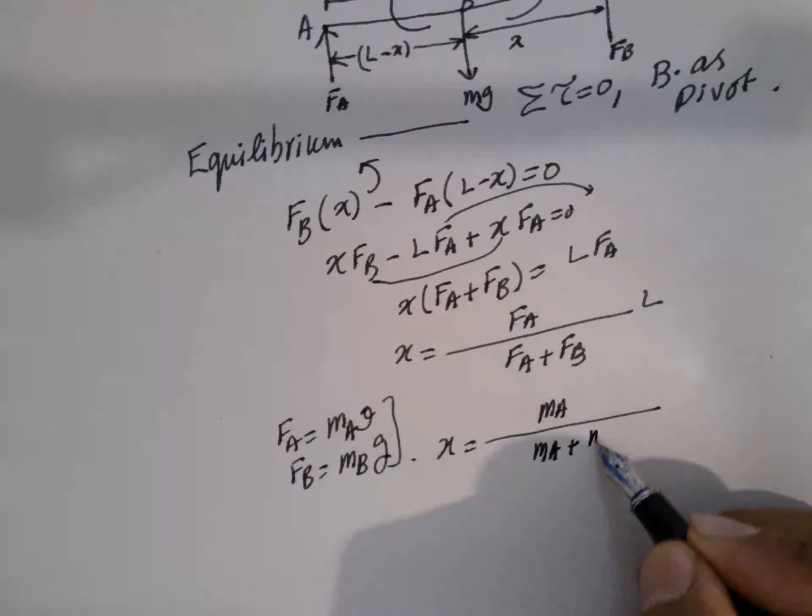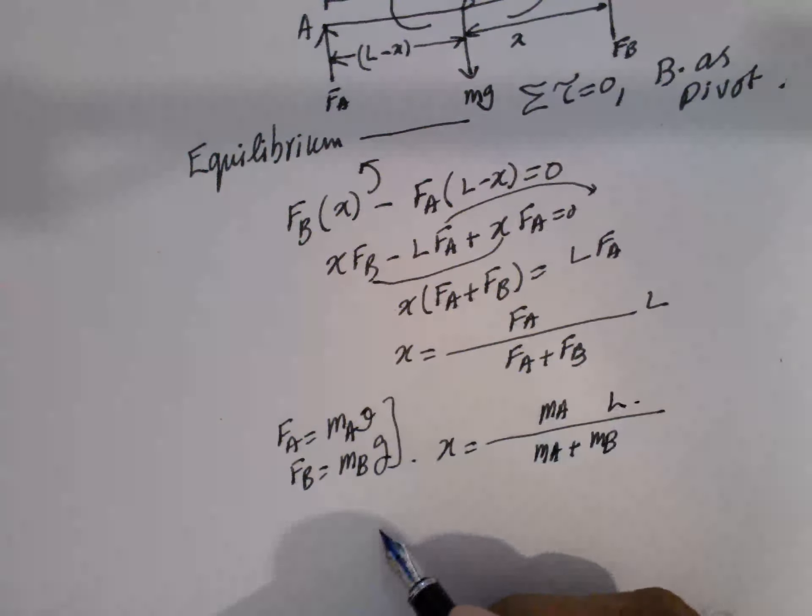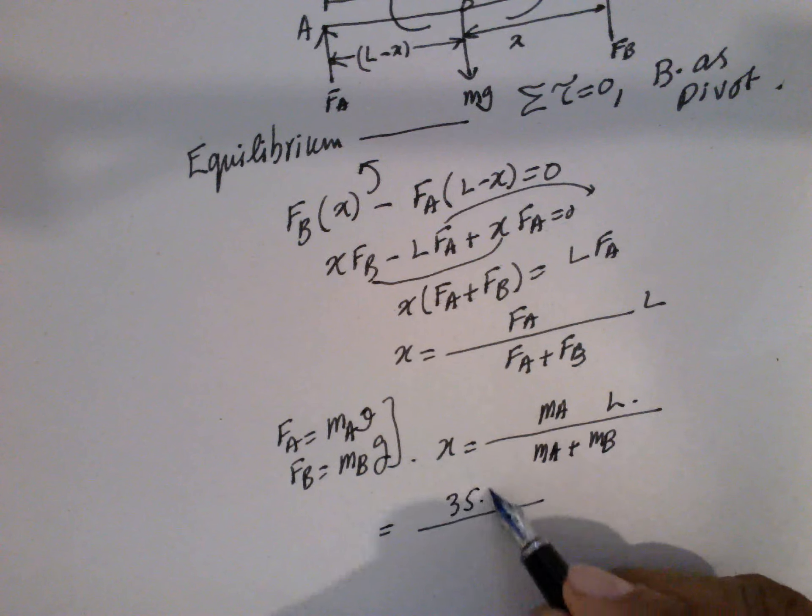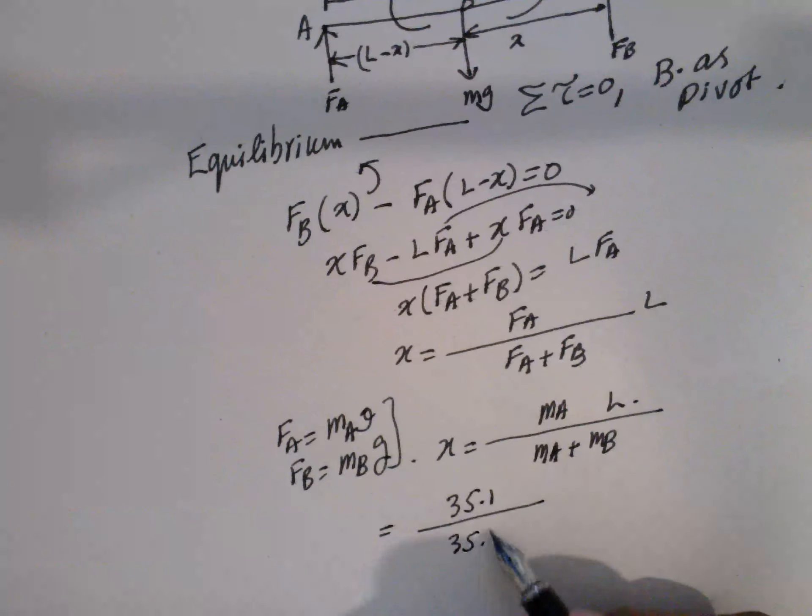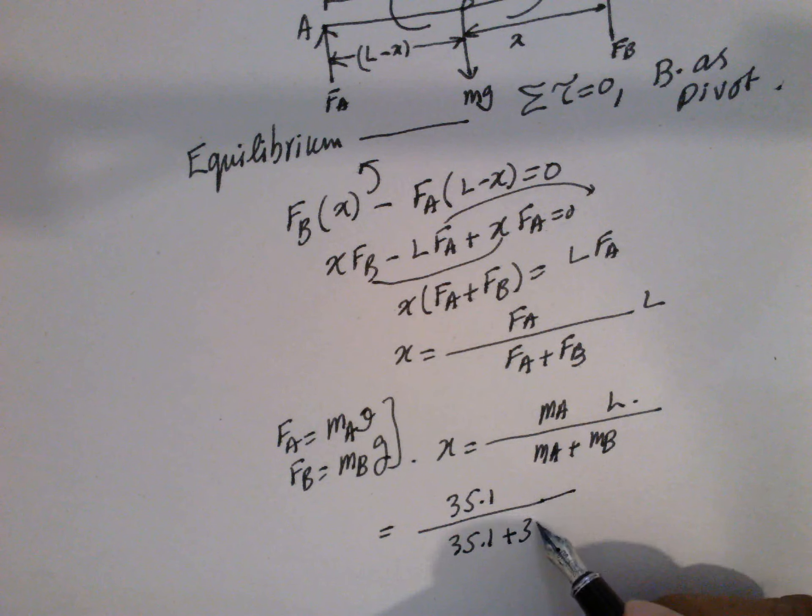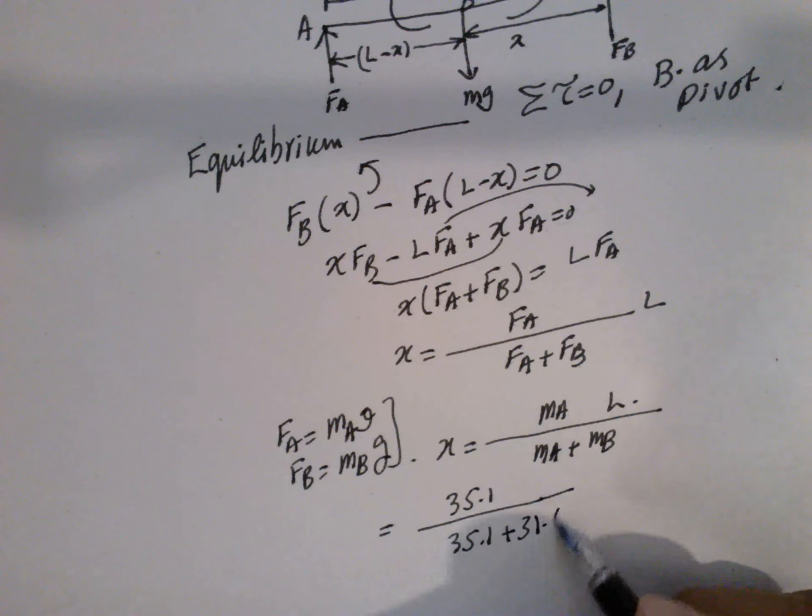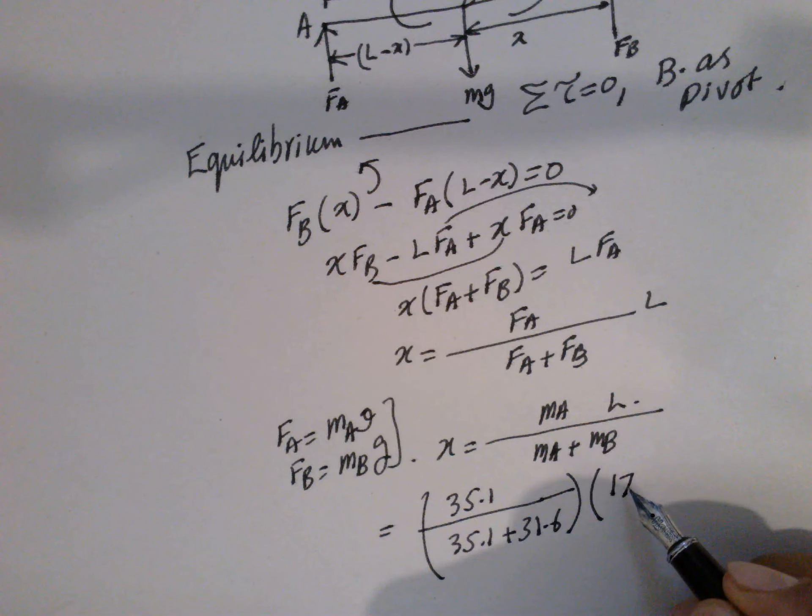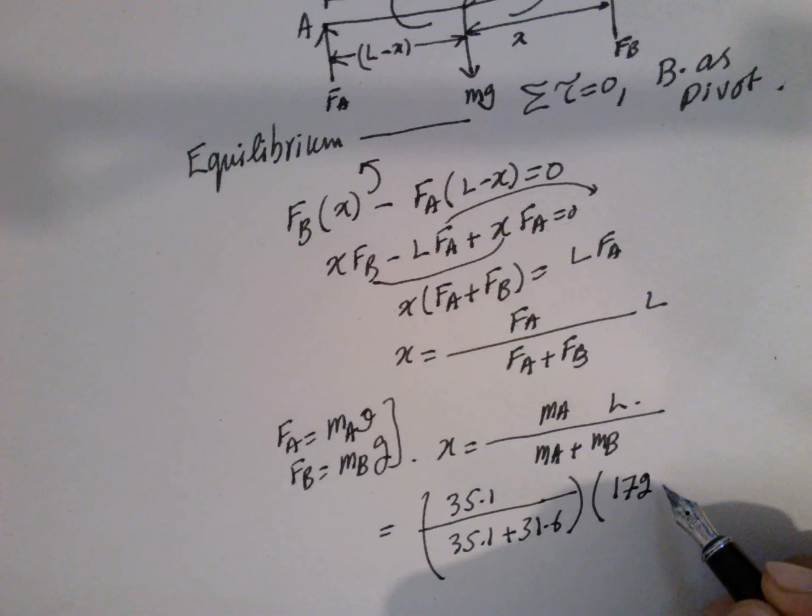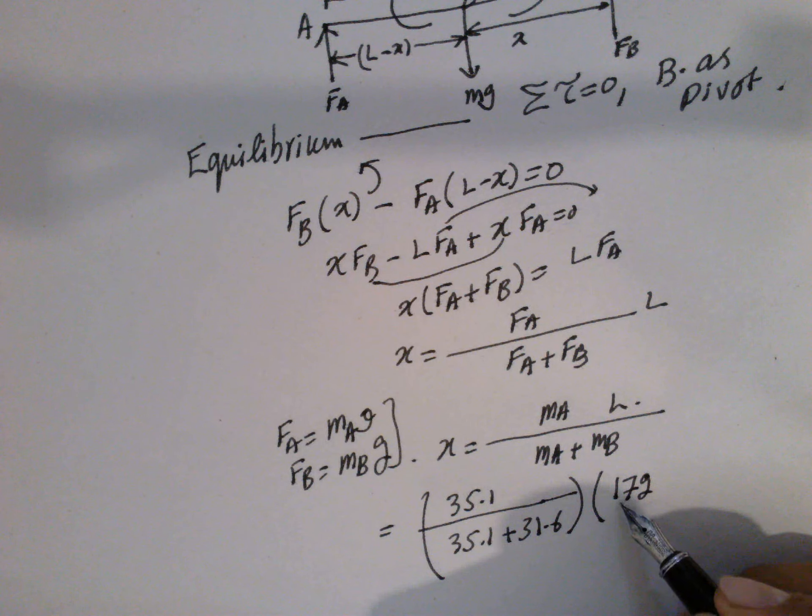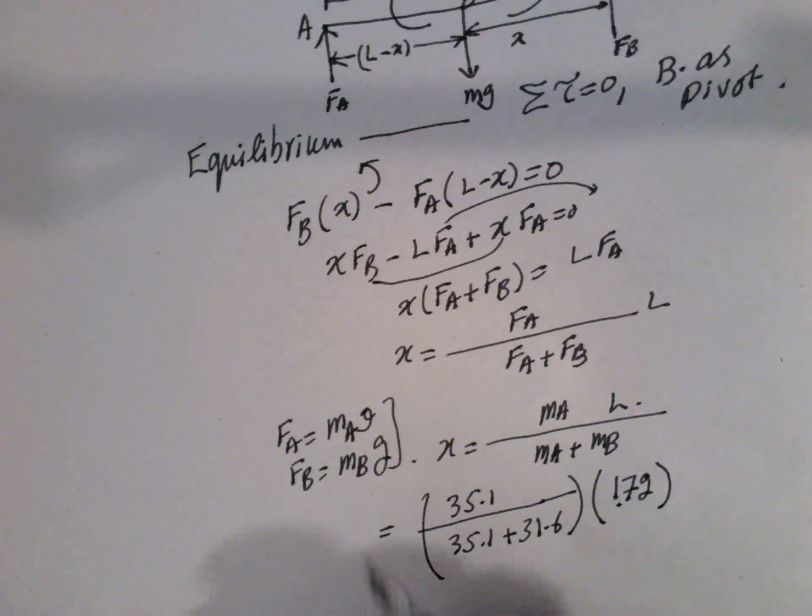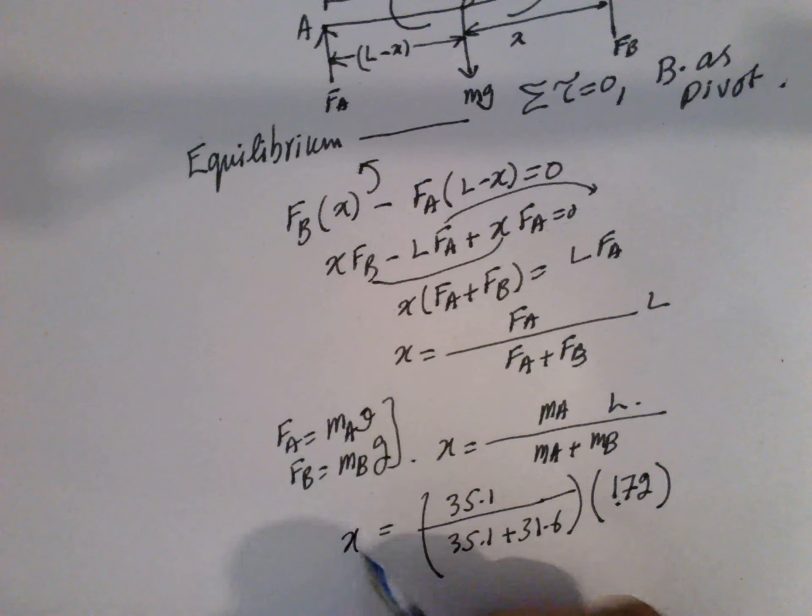MA plus MB into L. So this MA, this is A, this is 35.1, 35.1 plus 31.6 into 172. So centimeters, or 1.72 meters. So everything should be in meters, so this is equal to X.